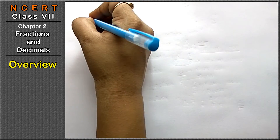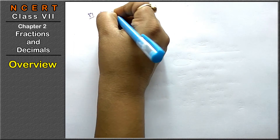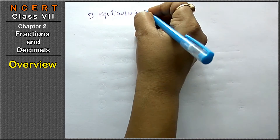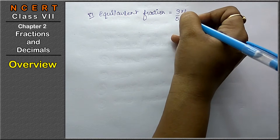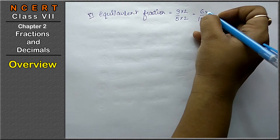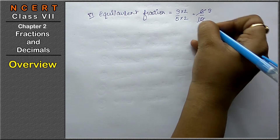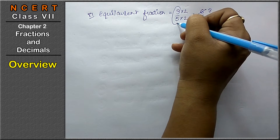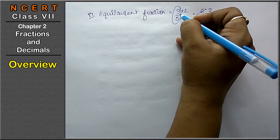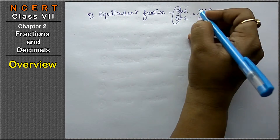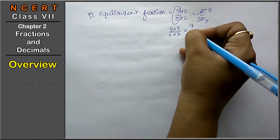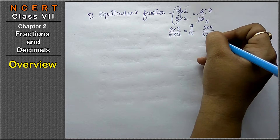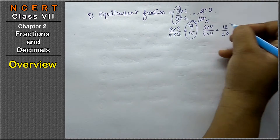The sixth type is equivalent fractions. Equivalent fractions are fractions like 3 upon 5 — if we multiply both numerator and denominator by 2, we get 6 upon 10. If we reduce it back to lowest form, we get the original fraction again. We can make as many equivalent fractions as we want: 3 upon 5 × 3 = 9 upon 15, or 3 upon 5 × 4 = 12 upon 20. All of these are equivalent fractions of 3 upon 5.